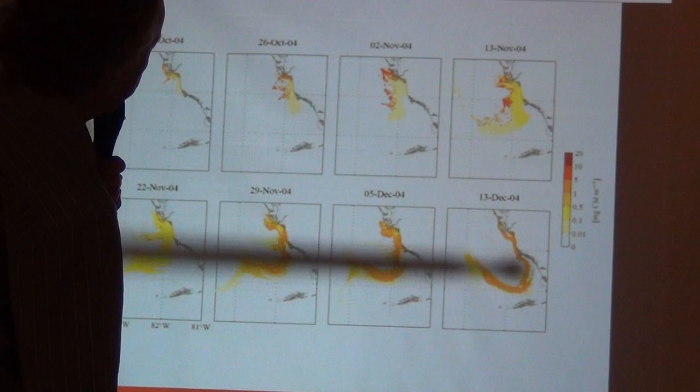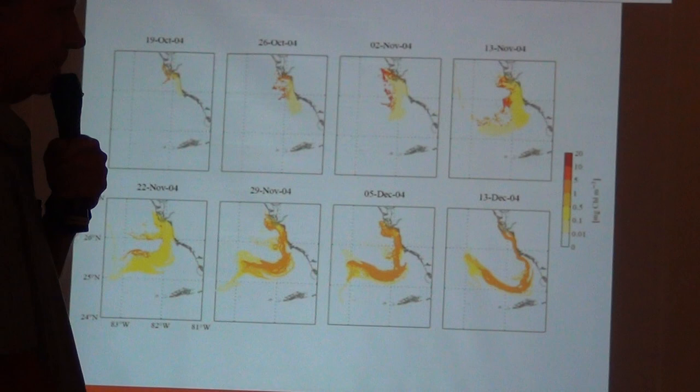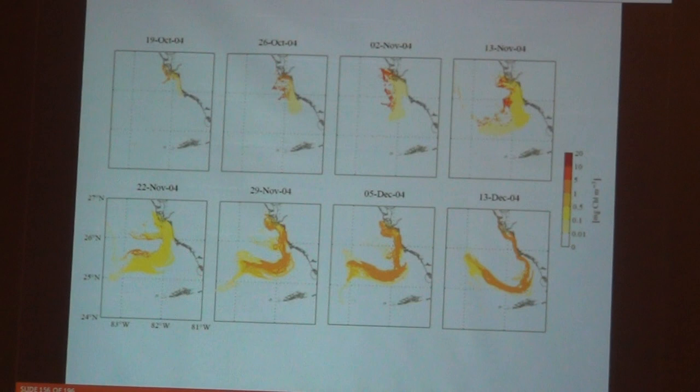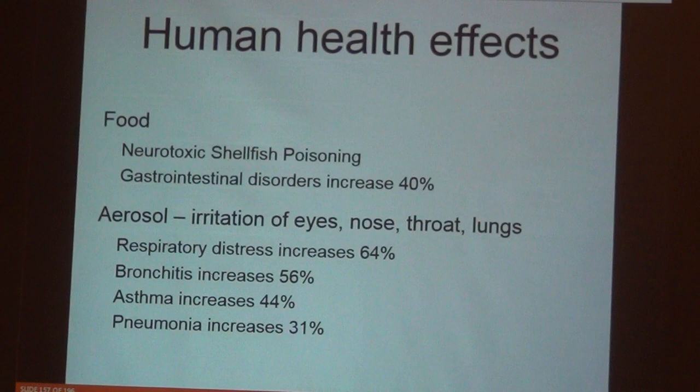We know that red tide is in this area. My colleague Josefina did some computer modeling with a physical model, and you can run the models backwards to see where that water came from. Surprisingly, that water came from the mouth of the Caloosahatchee River — that's where the nutrients are coming from.